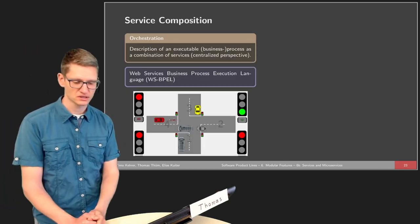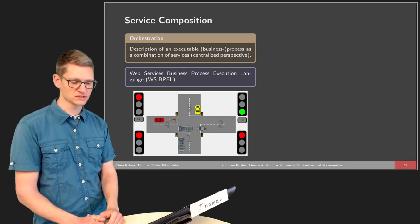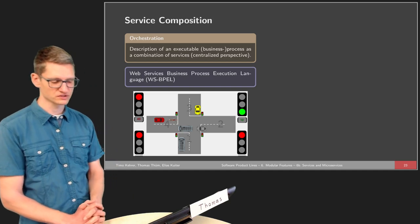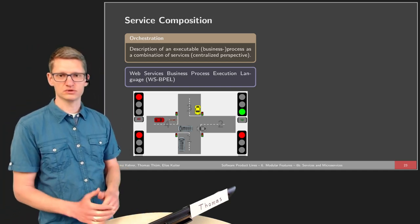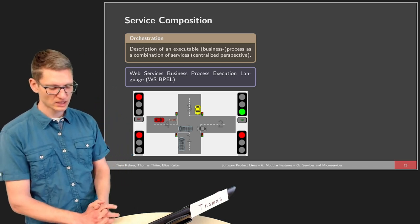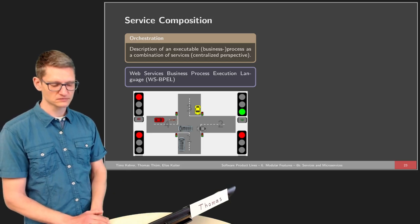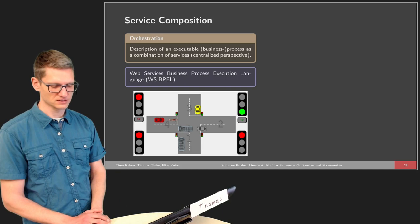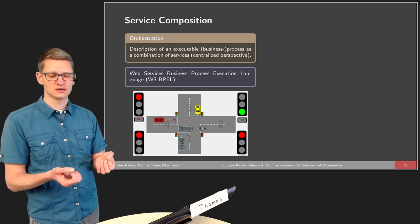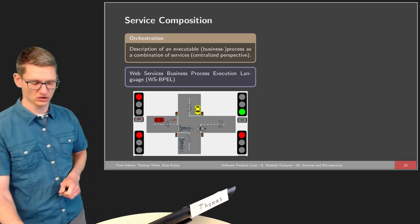There are two principal strategies to compose different services. One is orchestration — the description of an executable process as a combination of services. This is the centralized perspective, and an example is the Web Services Business Process Execution Language. This is similar to traffic lights: there is an overall system that manages how different services are connected, which data flows from one service to another — this is service orchestration.